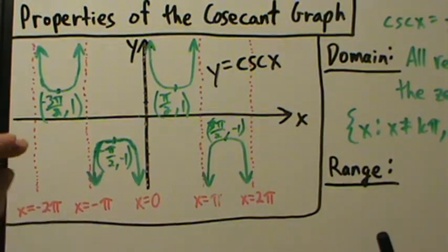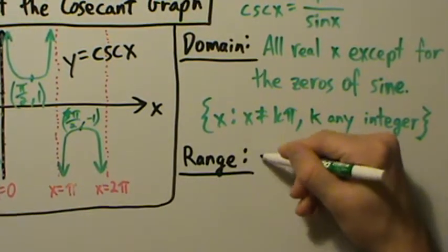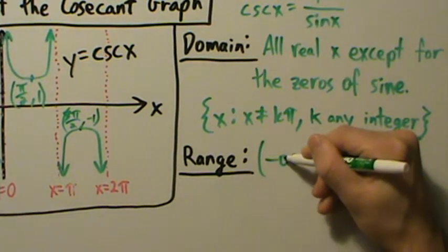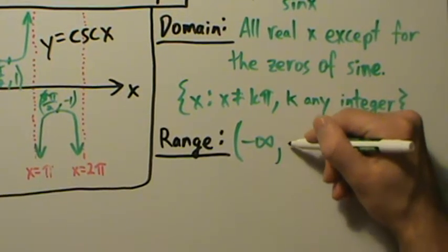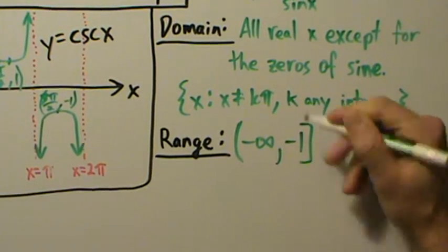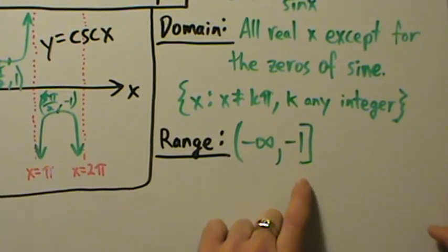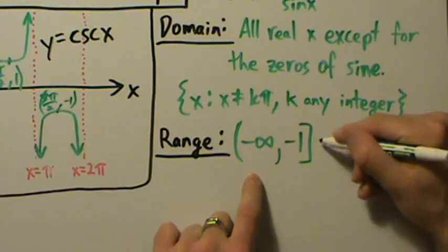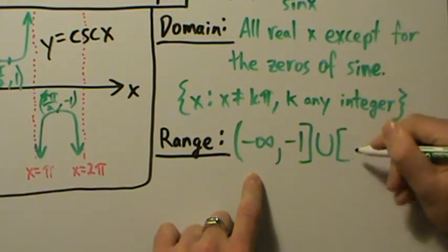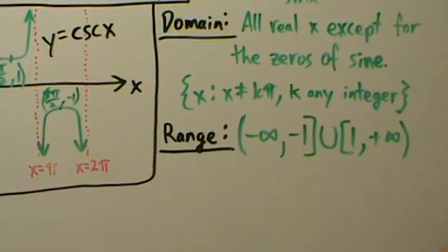Basically, the range is everything except in between negative 1 and 1. The way we say that mathematically, in interval notation, is: negative infinity to negative 1 with a square bracket on the negative 1 — because it is included in the range; remember, square bracket means include that endpoint, and always use round parentheses on infinity — union square bracket positive 1 to positive infinity. So that's our range.